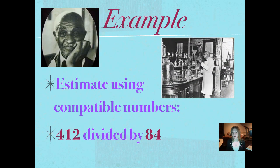Here is our example problem. We're going to estimate using compatible numbers. I thought it was really cool that George Washington Carver was the one who taught tobacco farmers and cotton farmers that they needed to rotate their crops so that their soil wouldn't get worn out.